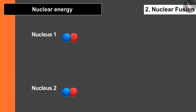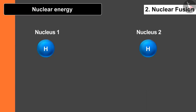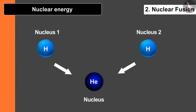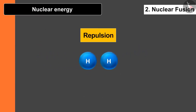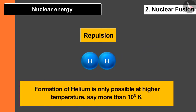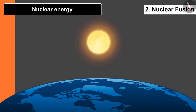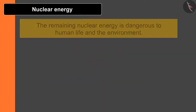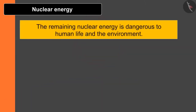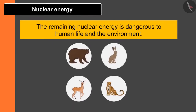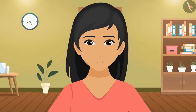In nuclear fusion, light nuclei fuse with each other to form a heavier nucleus — for example, hydrogen nuclei fuse to form helium. Due to repulsion between hydrogen nuclei, this fusion is only possible at very high temperatures, above 10⁶ Kelvin. Such temperatures are not achievable on Earth, but on the Sun this kind of temperature is common, so fusion takes place there. Nuclear energy is dangerous to human life and the environment, so safety is the top priority when obtaining it.